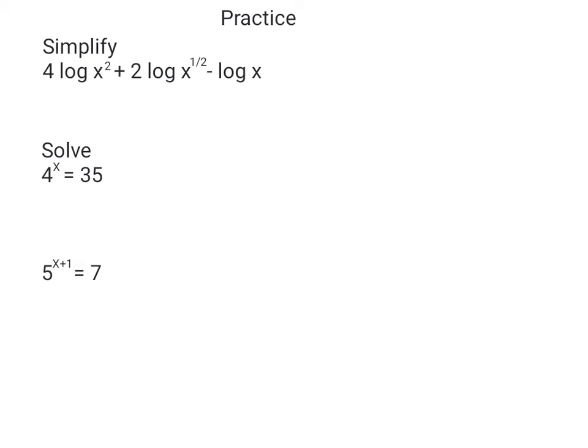If we have a power we can bring it to the front to get something simpler. So we bring the 2 to the front of our first term: instead of 4 log x squared we get 8 log x. Then we bring the half to the front of the other term: instead of 2 log x to the half, that's just a log x — a half times 2 being 1. Take away a log x — these cancel — so our answer is 8 log x.